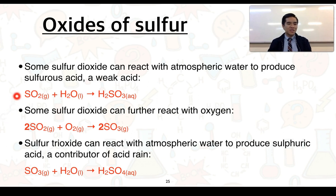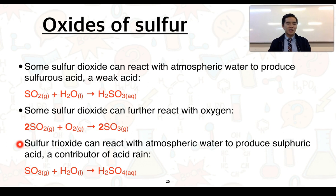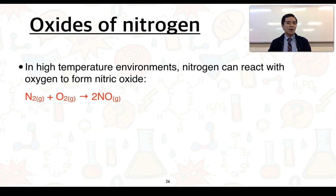Some of the sulfur dioxide gas can react with atmospheric water to produce sulfurous acid, which is considered a weak acid. While some SO₂ reacts with water, some can further react with oxygen to form sulfur trioxide, SO₃. This sulfur trioxide can then react with atmospheric water to produce sulfuric acid, H₂SO₄, which is classified as a contributor to acid rain.